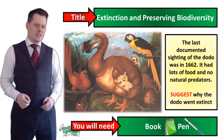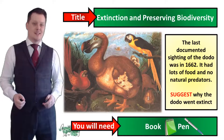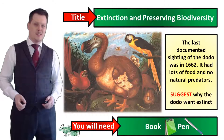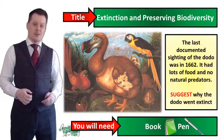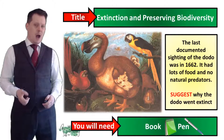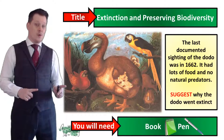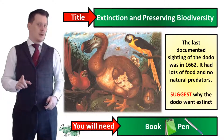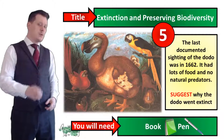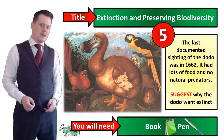For our starter activity, I would like you to consider that the last documented sighting of the dodo was in 1662. It had lots of food and no natural predators. I would like you to suggest why the dodo went extinct. Pause the video if you need more time, and when you're finished we'll go through the answers together.